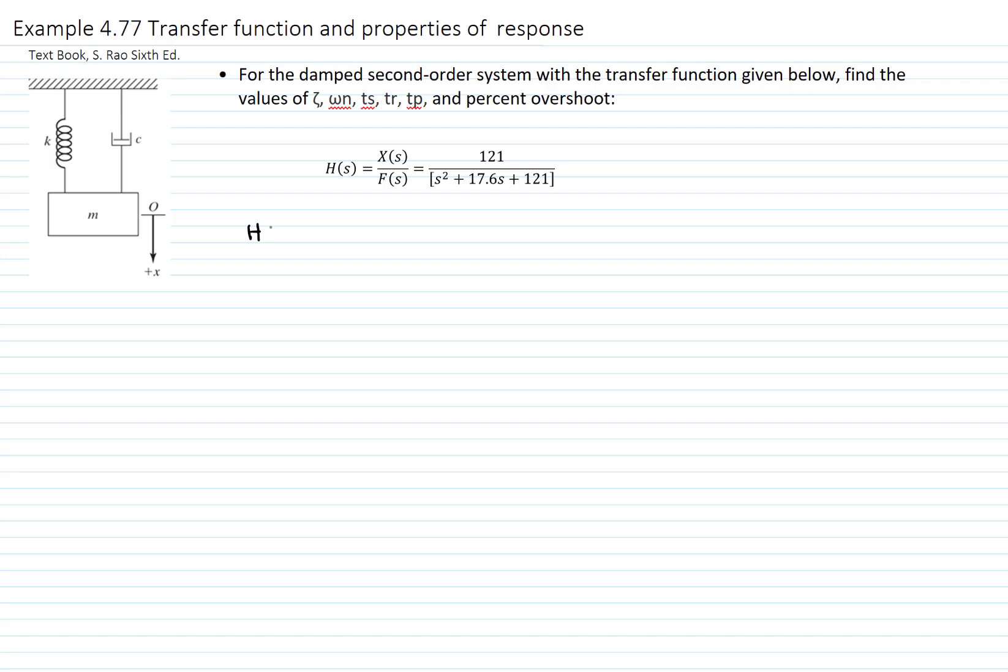As you recall from the theory, the transfer function is only dependent on the characteristics of the system and is defined as 1 over m s squared plus c s plus k. If we divide everything by m, we get that this equals 1 over s squared plus c over m s plus k over m, which equals 1 over s squared plus 2 zeta omega n s plus omega n squared.